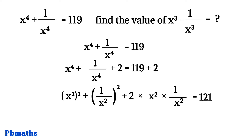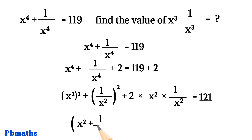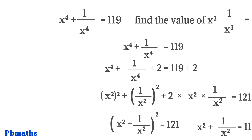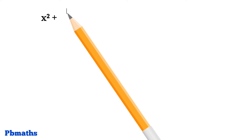Now, that left hand side is in the form of a plus b whole square, which is equals to a square plus b square plus 2ab. So with the help of that, we can write that left hand side part as x square plus 1 by x square whole square is equals to 121. Then let's apply square root on both sides. We have x square plus 1 by x square is equals to square root of 121, which is equals to 11. So x square plus 1 by x square is equals to 11.